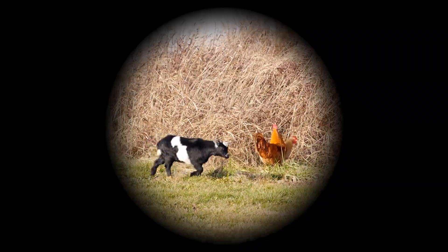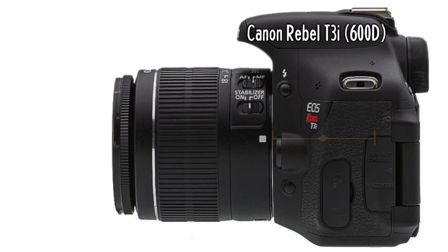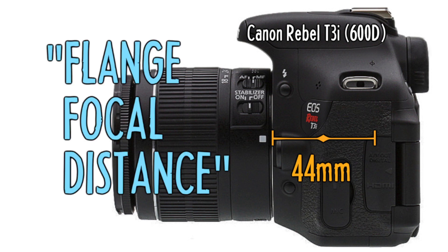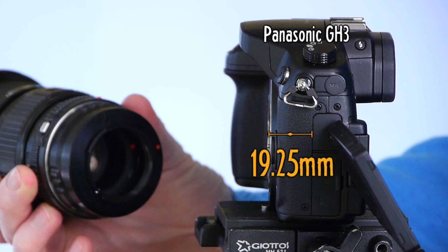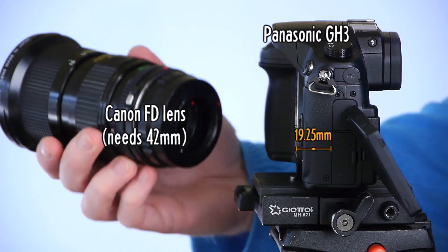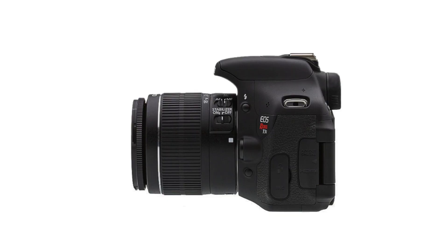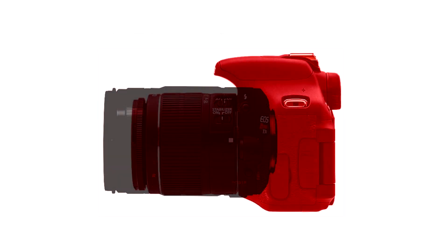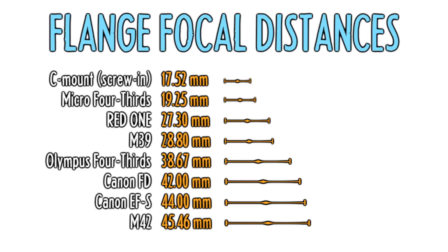Instead of a full image, the picture would look like a circular vignette. Lenses are designed to focus light precisely onto a specific type of sensor. On a Canon T3i, the sensor is 44mm from the back of the lens — this is called the flange focal distance. My GH3, because it doesn't have a mirror in front of the sensor, requires a much shorter flange distance. That means I can use a Canon lens on a GH3 simply by adding the extra distance with an adapter ring. But you can see why I couldn't put a Panasonic lens on a Canon, unless I use an adapter that includes another lens to refocus the light.